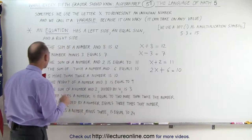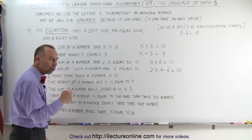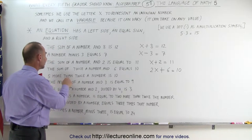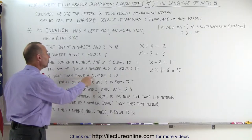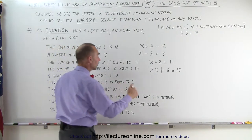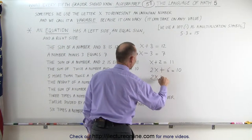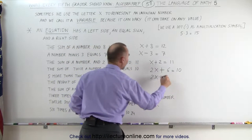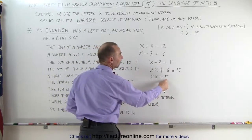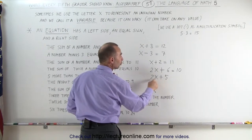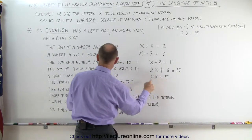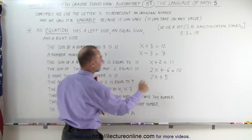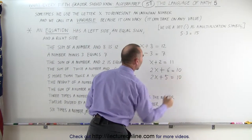The next sentence says: 5 more than twice a number. 'More' means addition, so we're going to add 5. Twice a number would be 2x, and 'more' means we add 5 to that. So this reads: 5 more than twice a number, and they tell us it's equal to 10: 2x + 5 = 10.